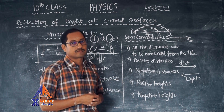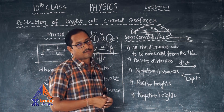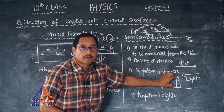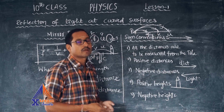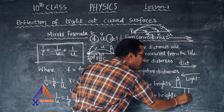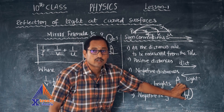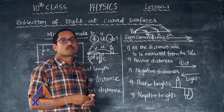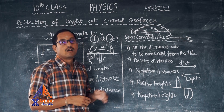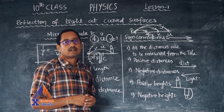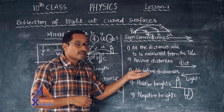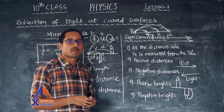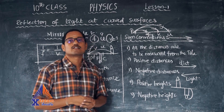Regarding heights: heights measured above the principal axis are considered positive. Heights measured below the principal axis are considered negative. To summarize all sign conventions: all distances are measured from the pole; distances in the direction of light are positive; distances opposite to light are negative; heights above the principal axis are positive; heights below the principal axis are negative.